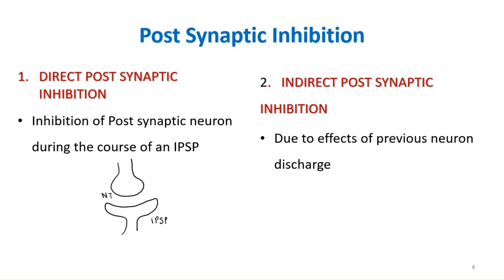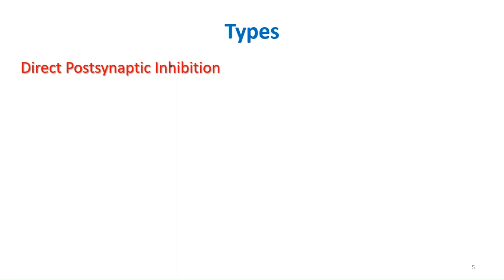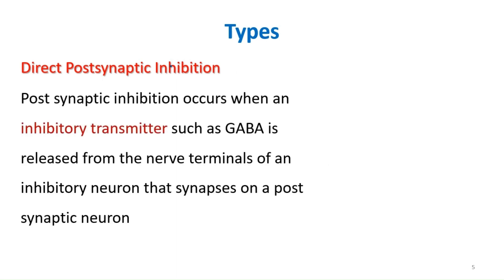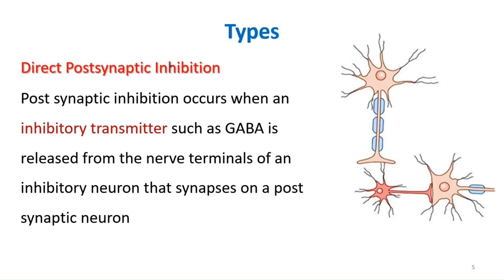In direct postsynaptic inhibition, it occurs when an inhibitory neurotransmitter such as GABA is released from the terminals of the inhibitory neuron that synapses on the postsynaptic neuron. In the diagram, you show a neuron synapsing onto an inhibitory interneuron that releases GABA, which then causes inhibition of the postsynaptic neuron.